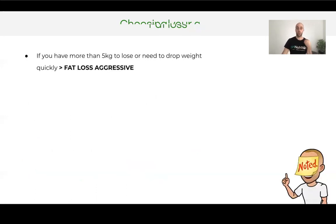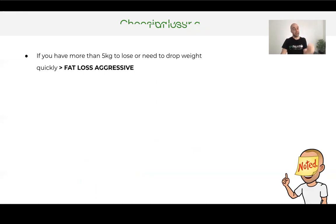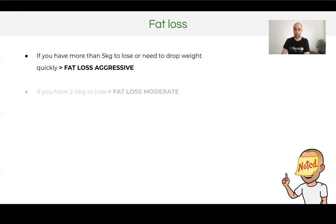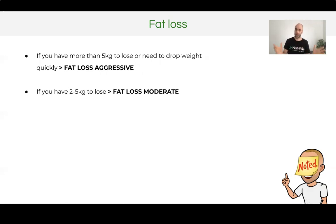We have four targets for fat loss and four targets for strength and muscle gain. If you have more than five kilos to lose, or you need to drop weight relatively quickly — maybe for a competition or a wedding — then fat loss aggressive is your target. This puts you in about a 400 to 450 calorie deficit, so relatively aggressive.